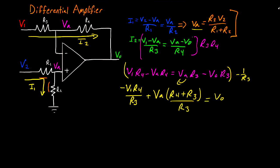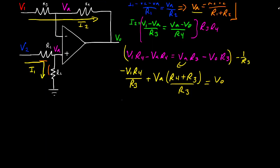Now we can plug in our value for VA. And this will give us minus V1 R4 divided by R3 plus R2 V2 divided by R1 plus R2 multiplied by R4 plus R3 divided by R3 is equal to VO.